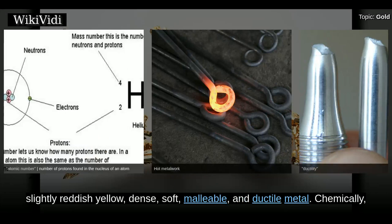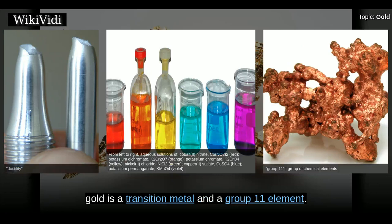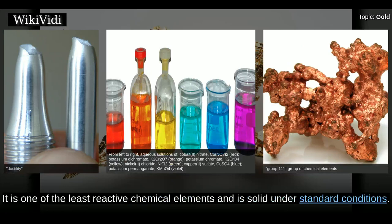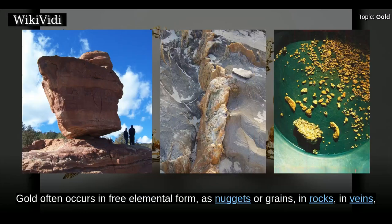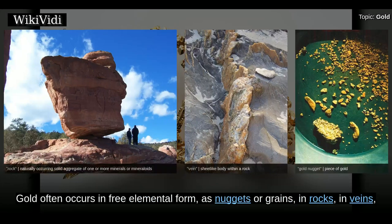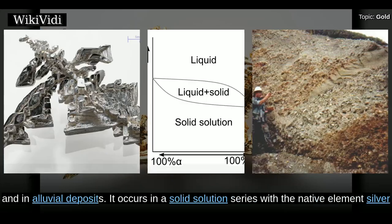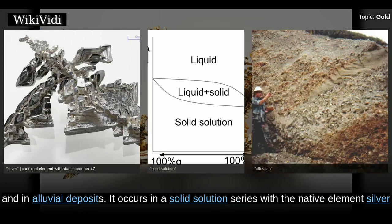Chemically, gold is a transition metal and a group 11 element. It is one of the least reactive chemical elements and is solid under standard conditions. Gold often occurs in free elemental form as nuggets or grains in rocks, in veins and in alluvial deposits.